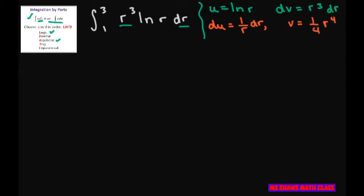Now we're going to fill this formula in and evaluate. We're going to get U times V, which is 1 fourth R to the fourth ln R, and we're going to evaluate it over the interval from 1 to 3.